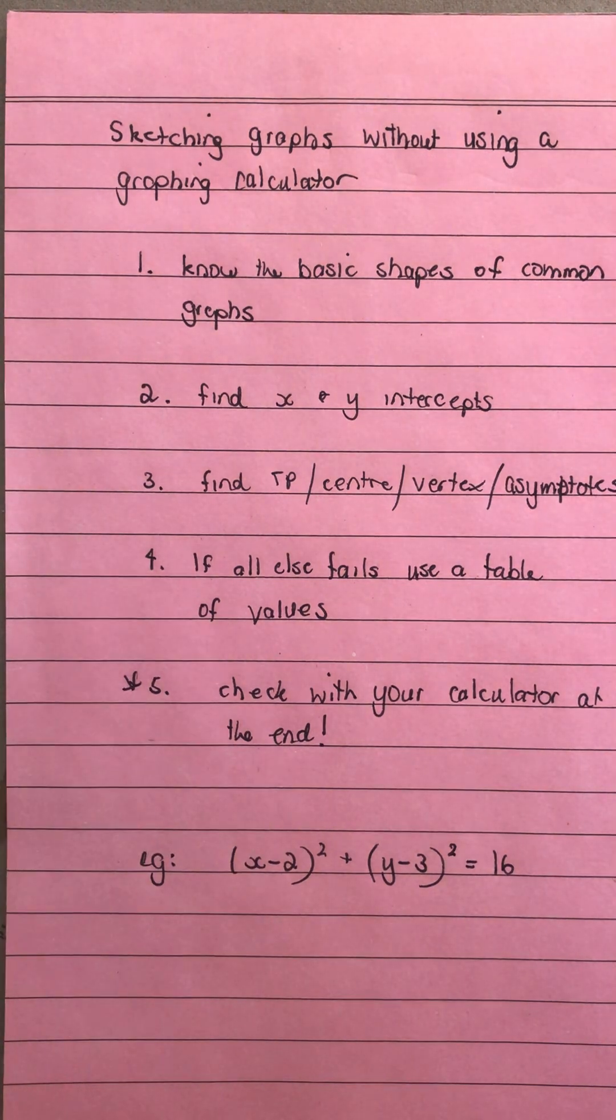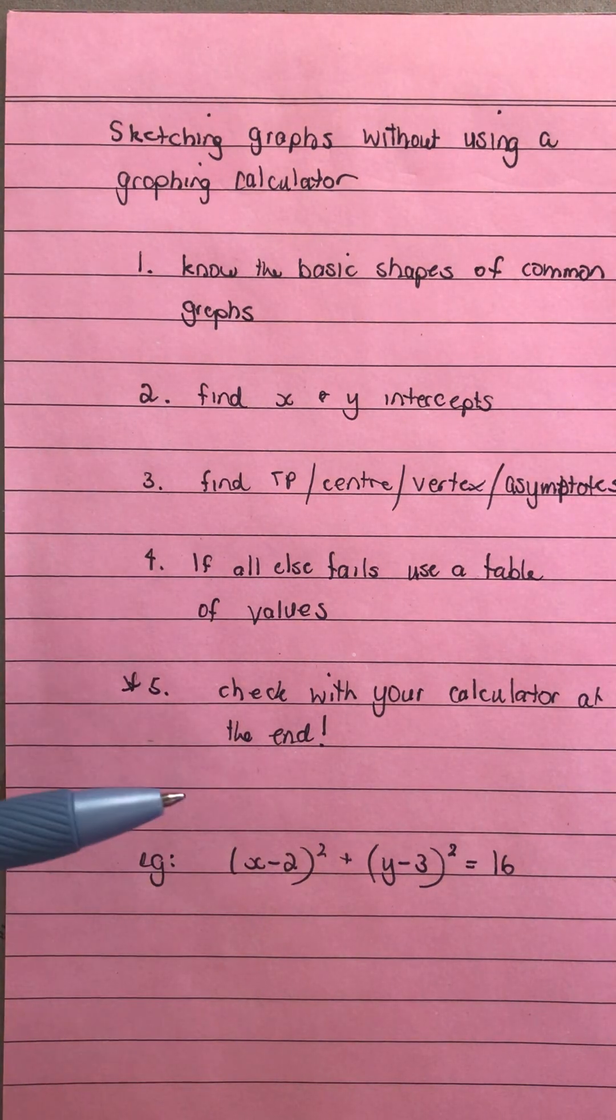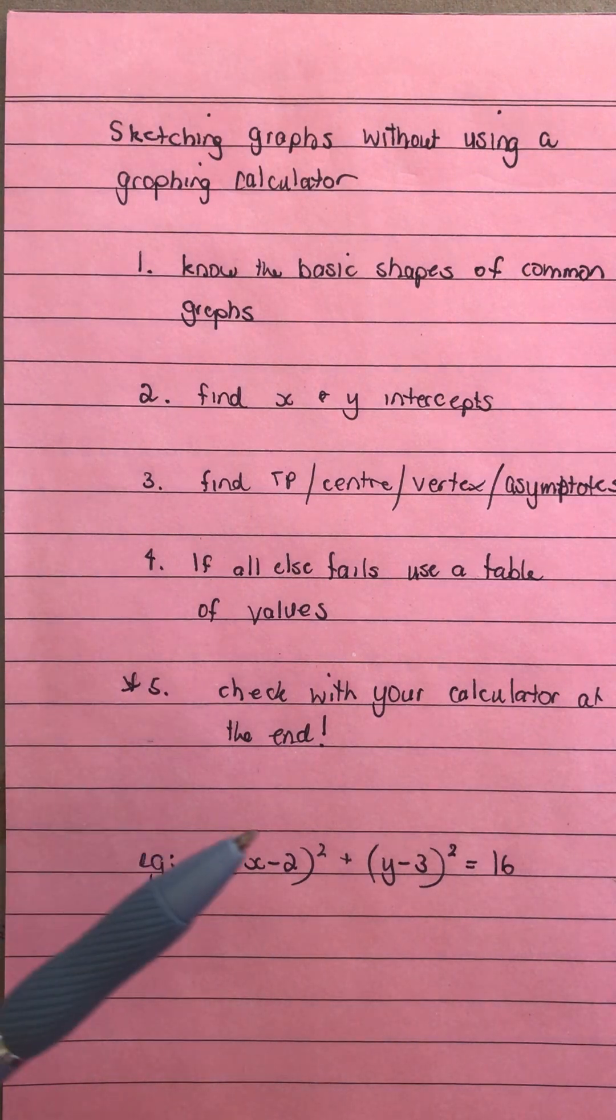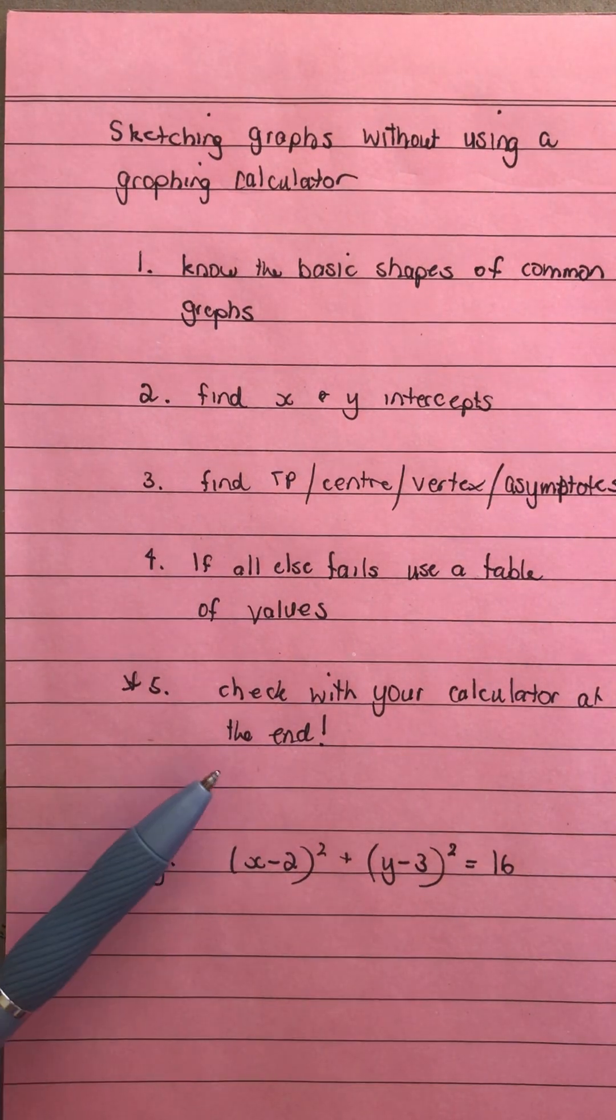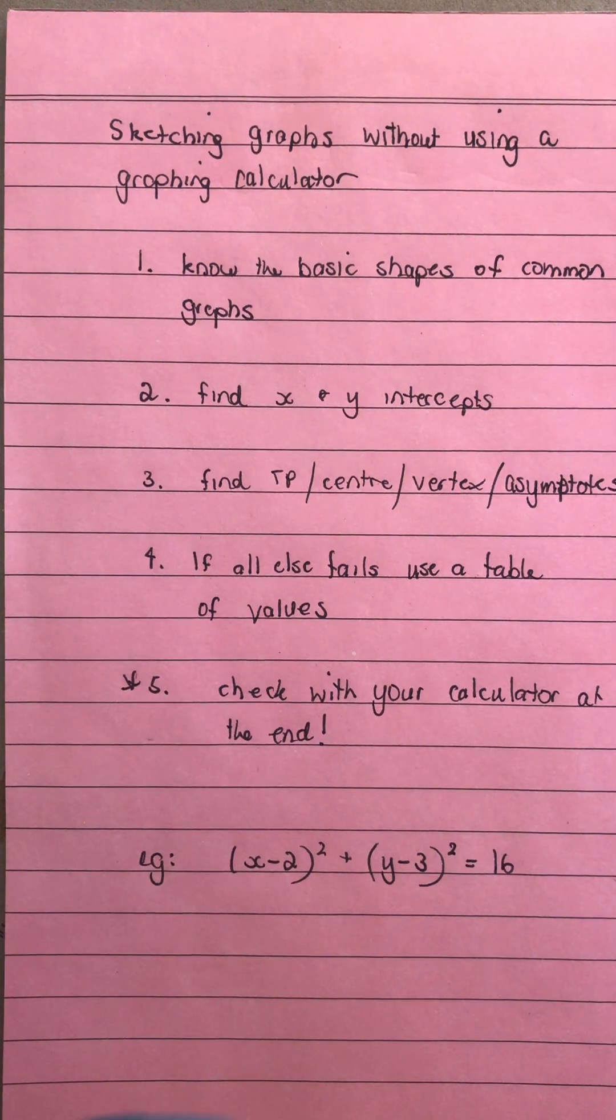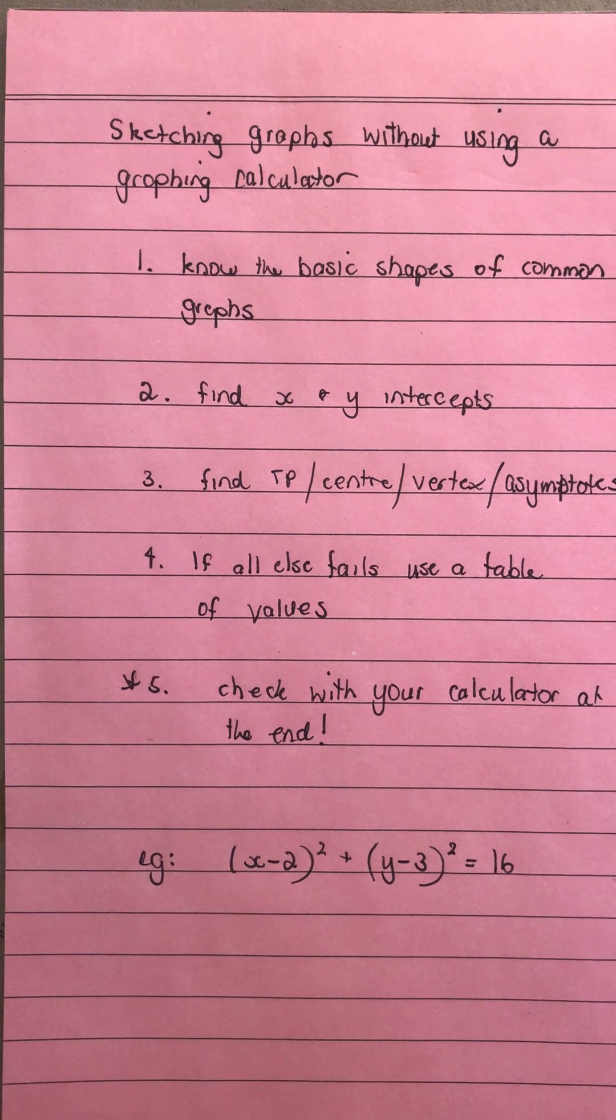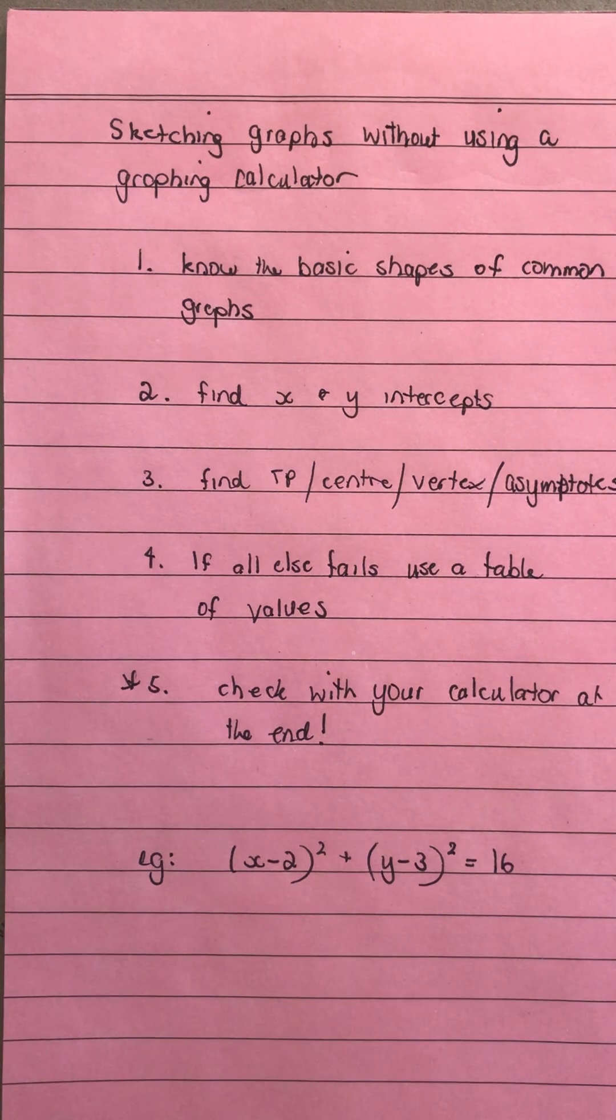And tip number five is to check it with your calculator at the end. Now even if it says tech free, if you've got your calculator in that exam with you anyway, use that to check your graph at the end. I have seen students produce a graph, they could have graphed it on their calculator to check, and they've actually drawn the completely wrong type of graph and lost all their marks. So always make use of that graphics calculator, even if it's a tech question, just to check you have got your graph correct.